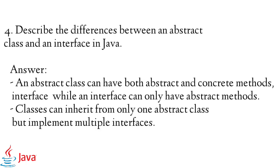Question 4: Describe the differences between an abstract class and an interface in Java. Answer: An abstract class can have both abstract and concrete methods, while an interface can only have abstract methods. Classes can inherit from only one abstract class but implement multiple interfaces.